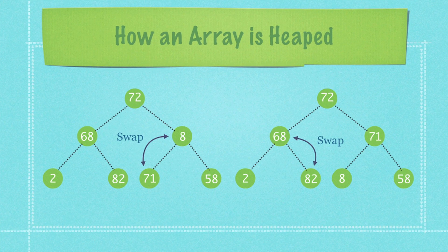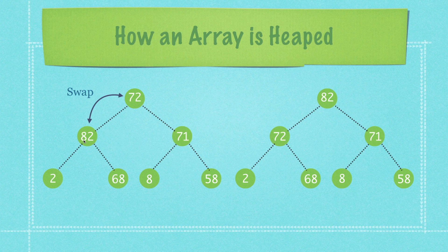Based off of the previous two things you can see exactly how an array is thrown into a heap format, which just means that all rows need to be complete except for the last row and all parents are bigger than children. If we have an item that doesn't follow one of those rules — meaning that 71 is greater than 8 — we would just swap it, and so forth with 82 to 68 and then 82 to 72. Now in this final picture the heap is properly sorted because all the parents are greater than the children, which is really the only rule.